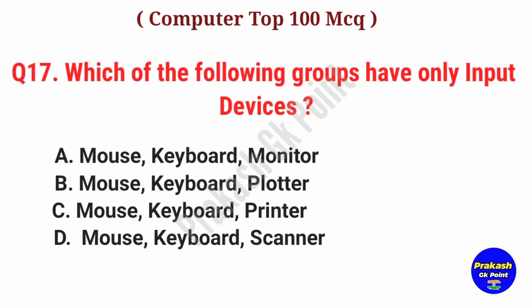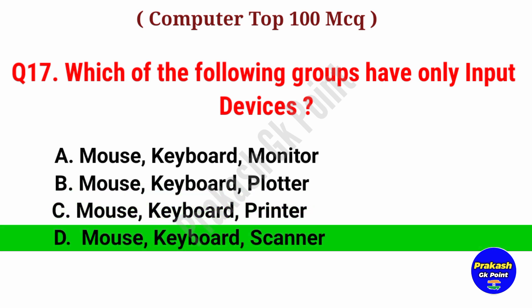Which of the following groups have only input devices? Answer: Option D, Mouse, Keyboard and Scanner.